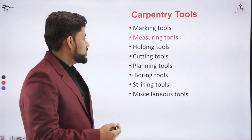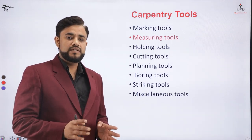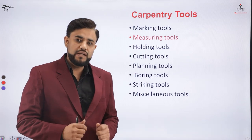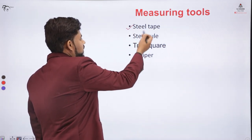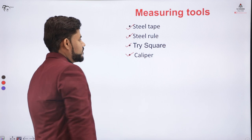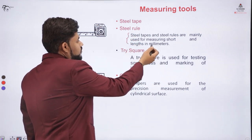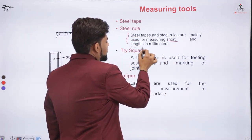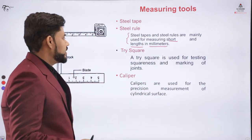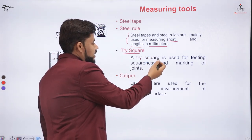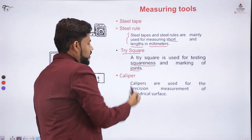Coming to the measuring tools — as the name suggests, they are used to measure the dimensions or distances, which is necessarily required while performing any carpentry operation. The measuring tools we are studying are: steel tape, steel rule, a tri square, and a caliper. Steel tape and steel rules are used for measuring short lengths in millimeters. A tri square is an instrument used to check the squareness and to mark the same on the joints.